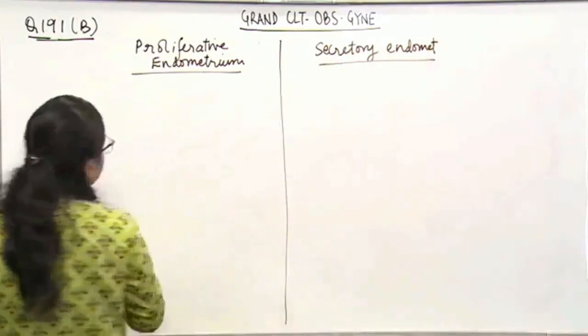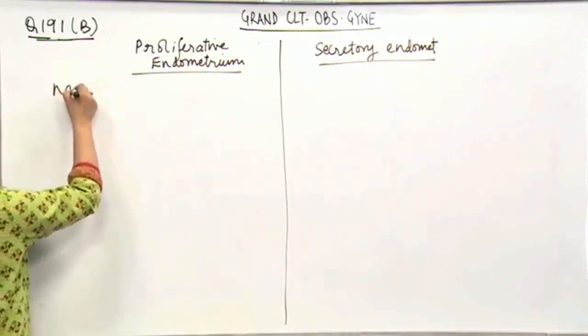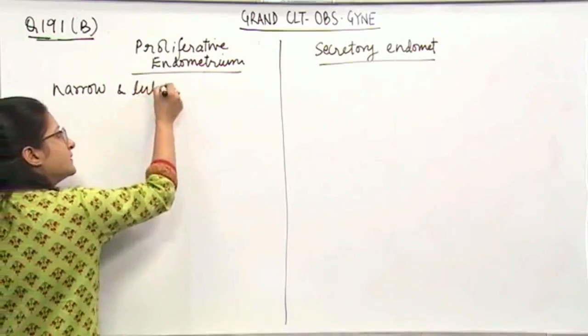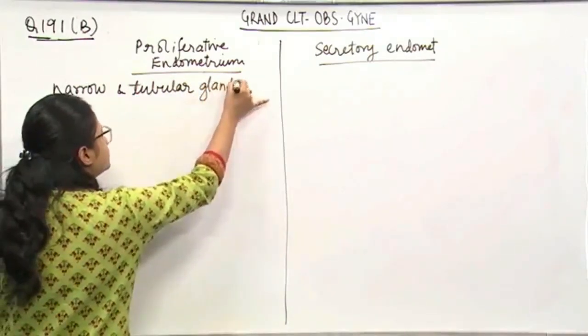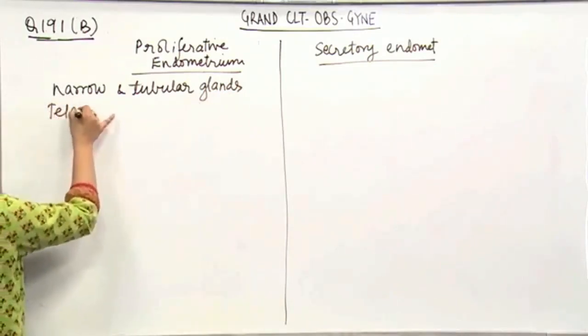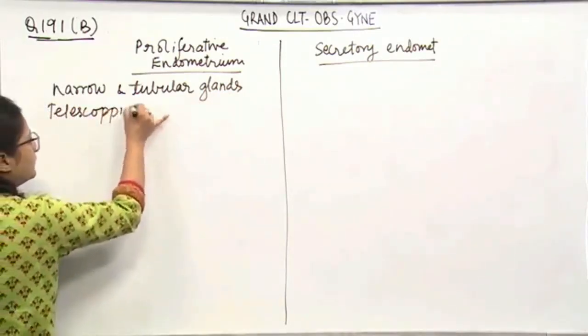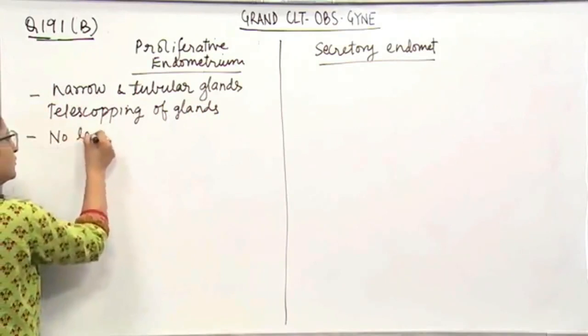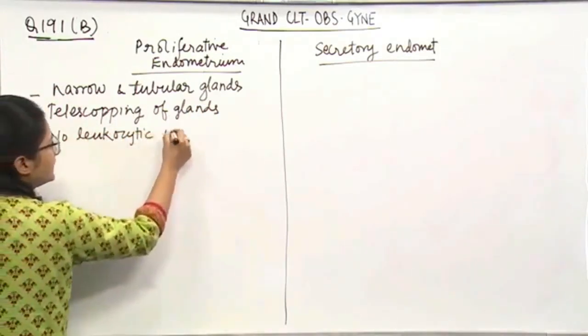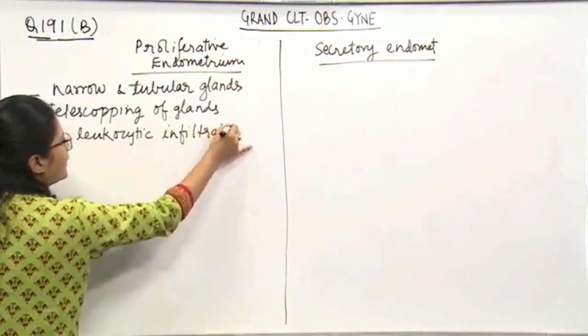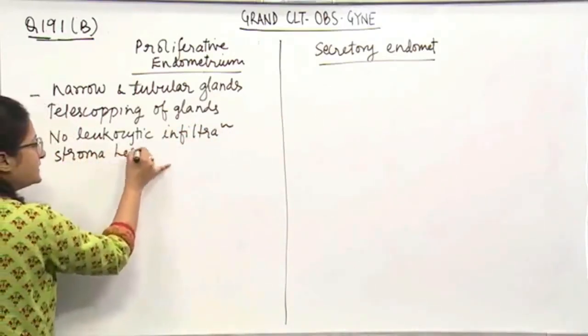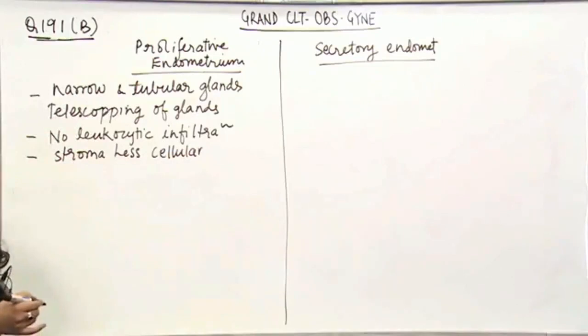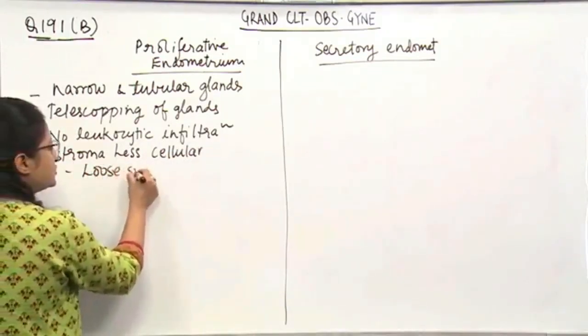Important points to remember about the proliferative endometrium is that there are narrow and tubular glands, which is also known as telescoping of glands. There is no leukocytic infiltration and the stroma is less cellular. It is loose syncytial stroma.